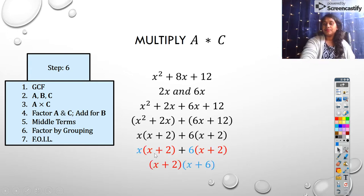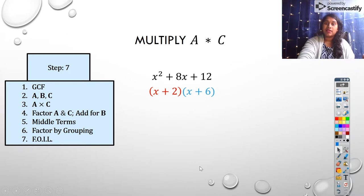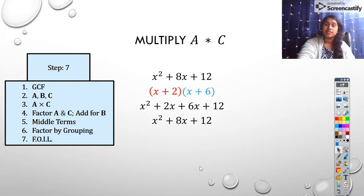So there you have our two factors, right? So we test it, step 7, we test it by foiling back. And you get x² + 2x + 6x + 12, first, outer, inner, last. And we combine that back, and we get x² + 8x + 12, which is the same one we started with. That means this is our correct foil. So that's what it means to multiply A times C.